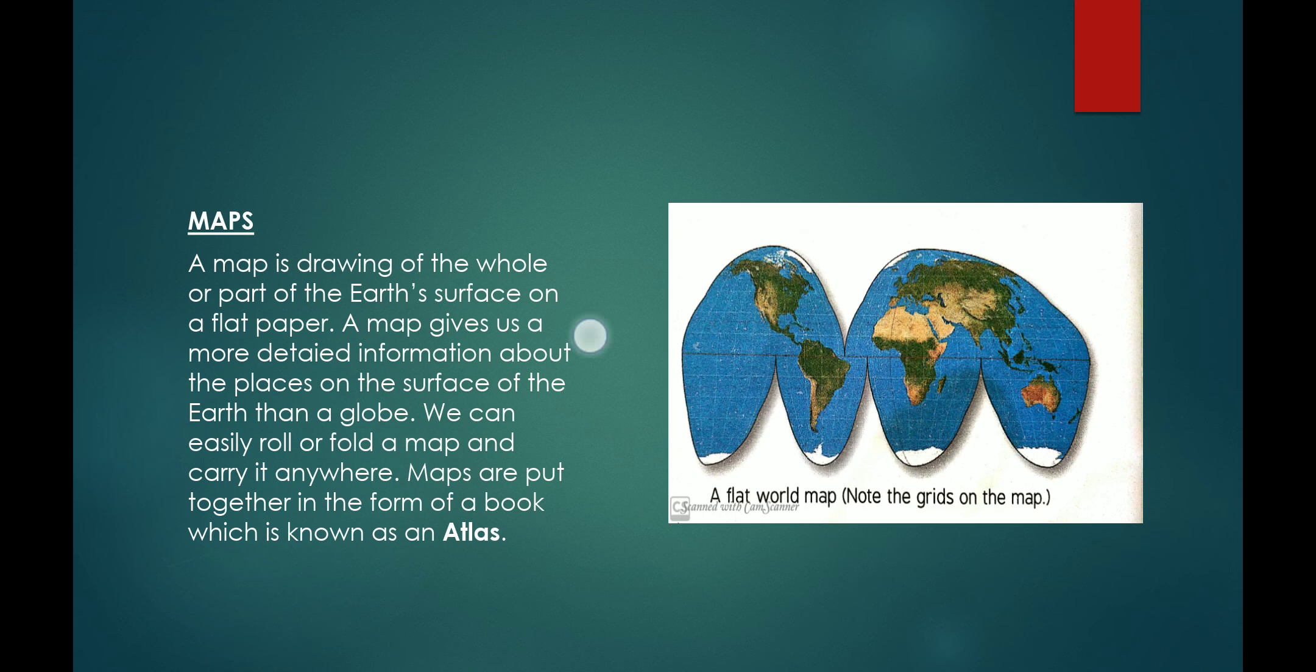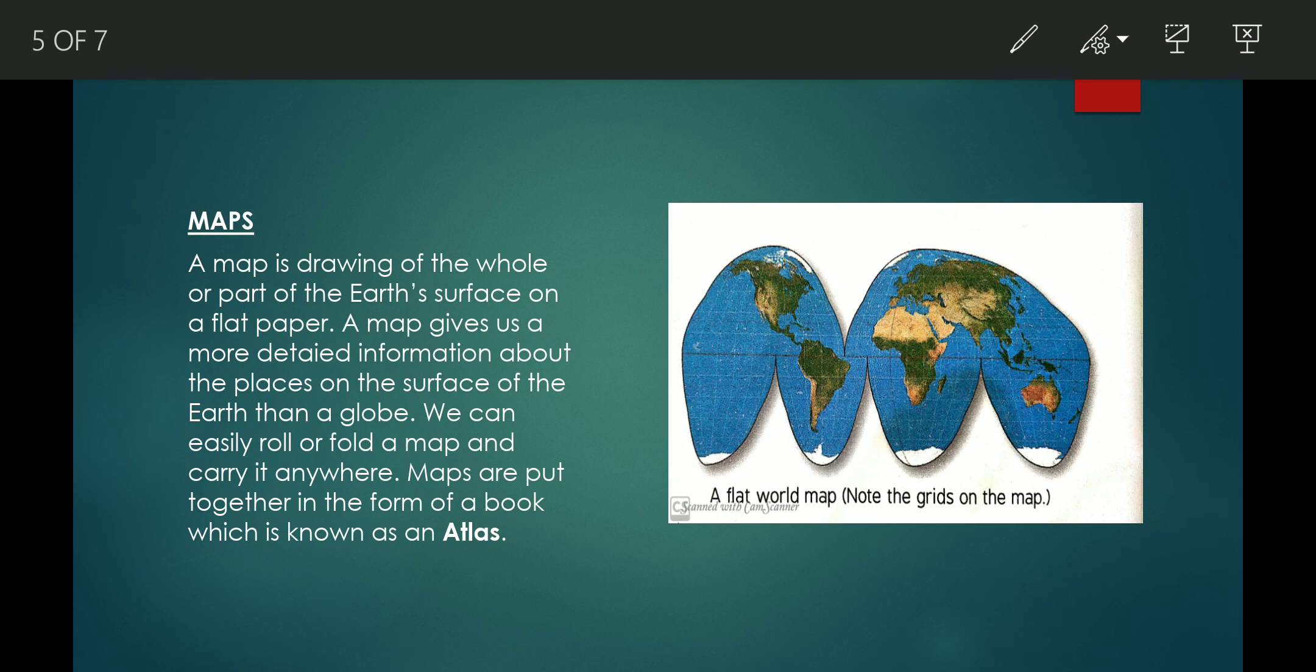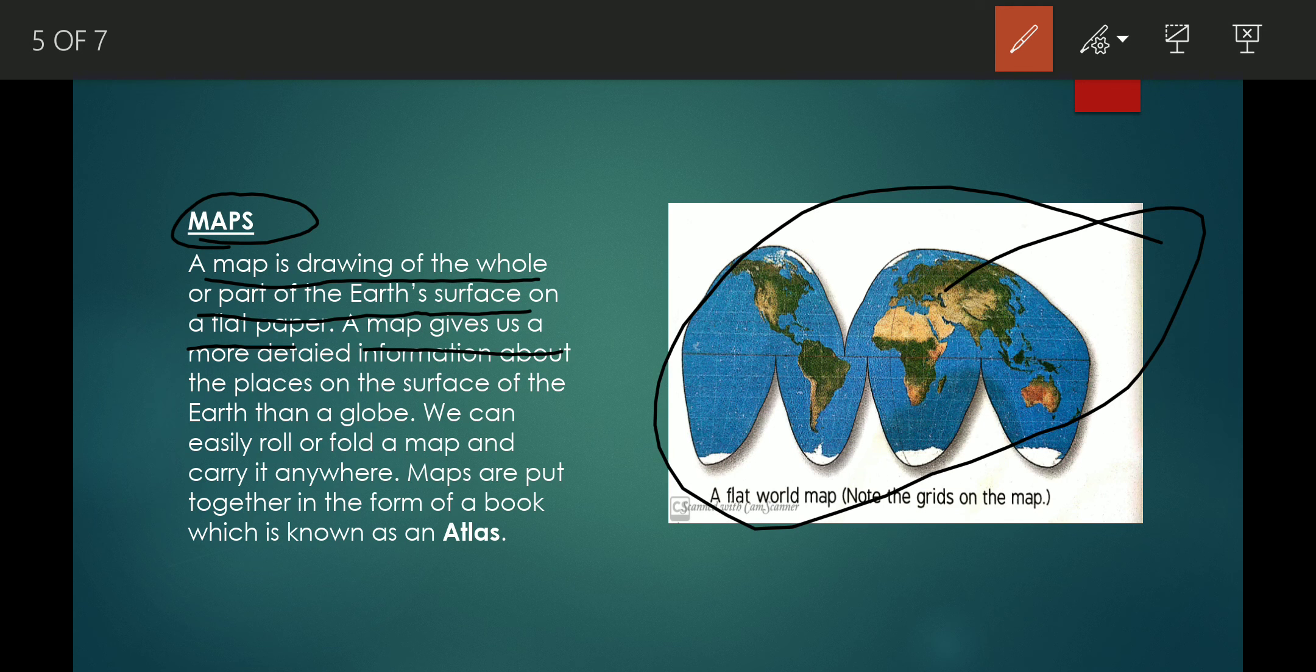A map is a drawing of the whole or part of the earth's surface on a flat paper. It is a 2D dimensional picture. A map gives us more detailed information about places on the earth's surface than a globe.